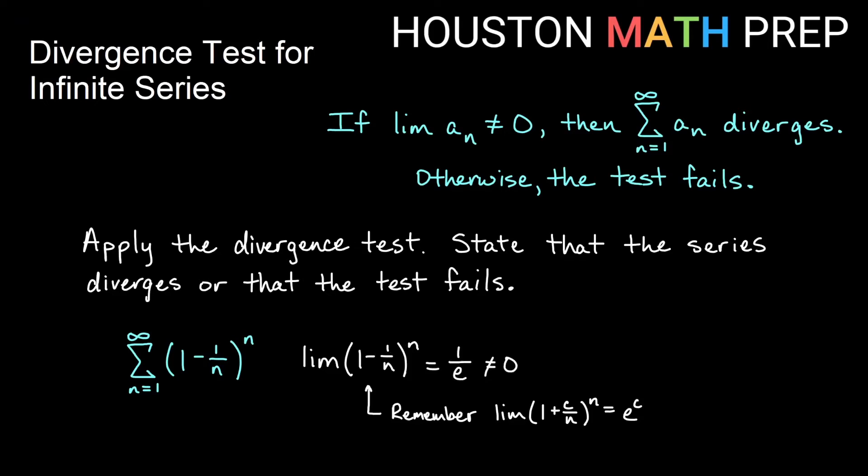then this limit is actually going to be e to the negative 1, also known as 1 over e, the reciprocal of e. But this number is not 0. 1 over e is not 0. So since the limit is not 0, we know that this will diverge by the divergence test.